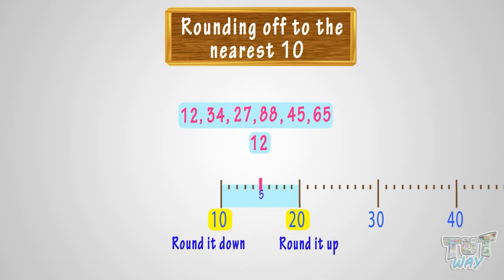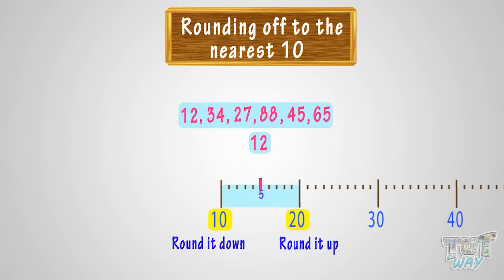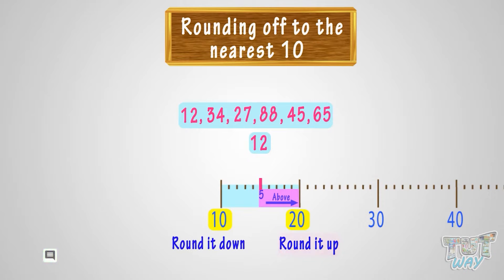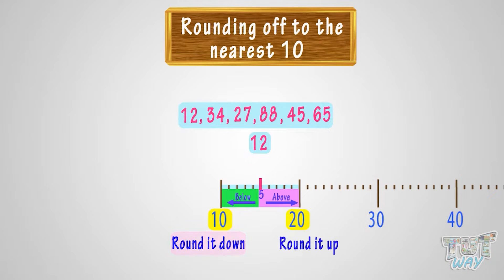Here is a rule to help you. We have a 5 mark midway between the two 10s always. If the number is above the 5 mark, you round it up. And if the number is below the 5 mark, you round it down.